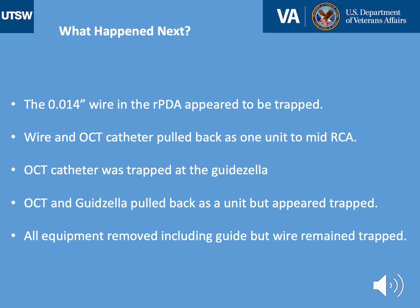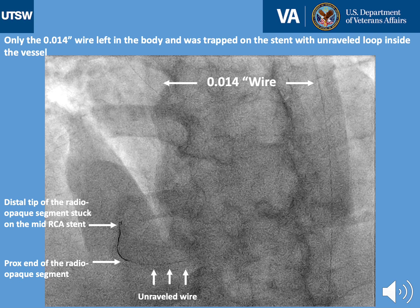We decided to remove all the equipment including the guide and wire to avoid any additional problems. However, everything came out except the wire, which seemed to be trapped in the vessel. The only thing left in the body was the trapped 0.014 wire inside the RCA, and the 6 French short sheath in the groin. You can see the wire in the descending aorta, the arch, and the ascending aorta, with the radiopaque segment visible.